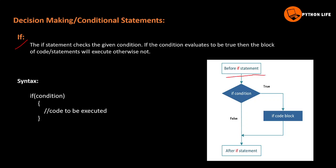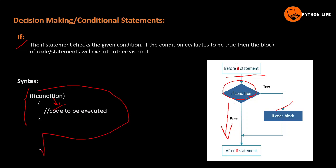Let's look at this diagram. Before if statements are executed, the if condition is checked. If the condition is satisfied, the if code block will be executed. If not, it will be false. In the syntax, if the condition is met, the code to be executed runs; otherwise the next statement will be reached.